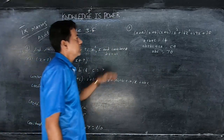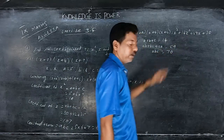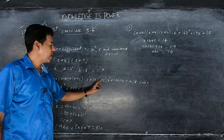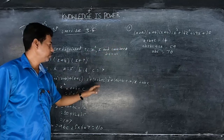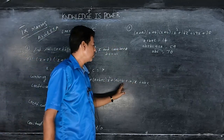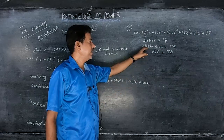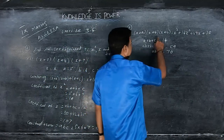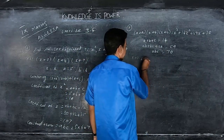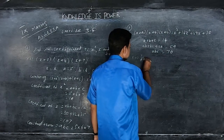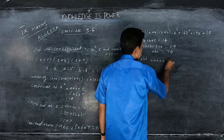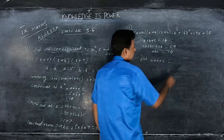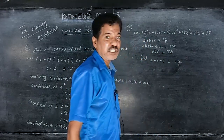Sub-question 1 answer: a+b+c = 14. Now sub-question 2: find 1/a + 1/b + 1/c. Take the LCM as abc in the denominator. The numerator becomes bc + ac + ab, which is ab+bc+ca = 59, divided by abc = 70. So 1/a + 1/b + 1/c = 59/70.